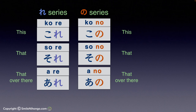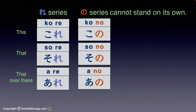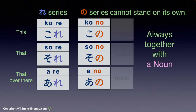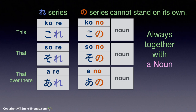Please take notes. Unlike the re series, the no series cannot stand on its own — they always have to be together with a noun. You may want to remember that this の functions just like the particle の. It connects ko, so, a with a noun.